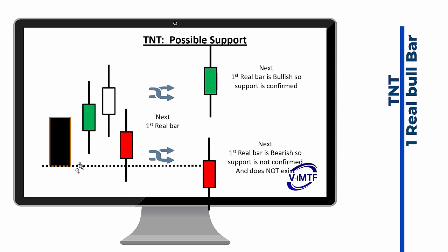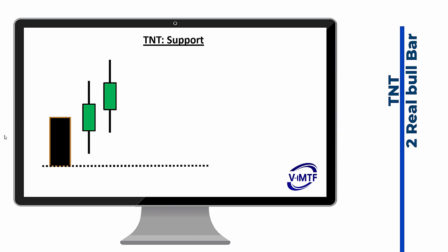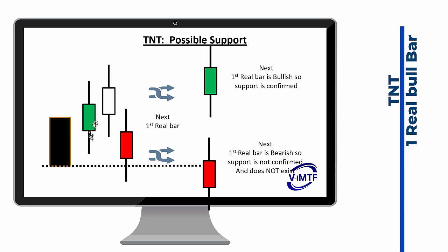If this is a bearish trade where you broke the low, you're looking to validate the top of the TNT as a resistance. To recap: two real bullish bars confirm support right away. If the first bar is real, it activates a possible support. If the first bar is not real, it does not activate as a possible support at all. You then have to come back, test and hold, and produce a real bullish bar to make that TNT low a confirmed support.